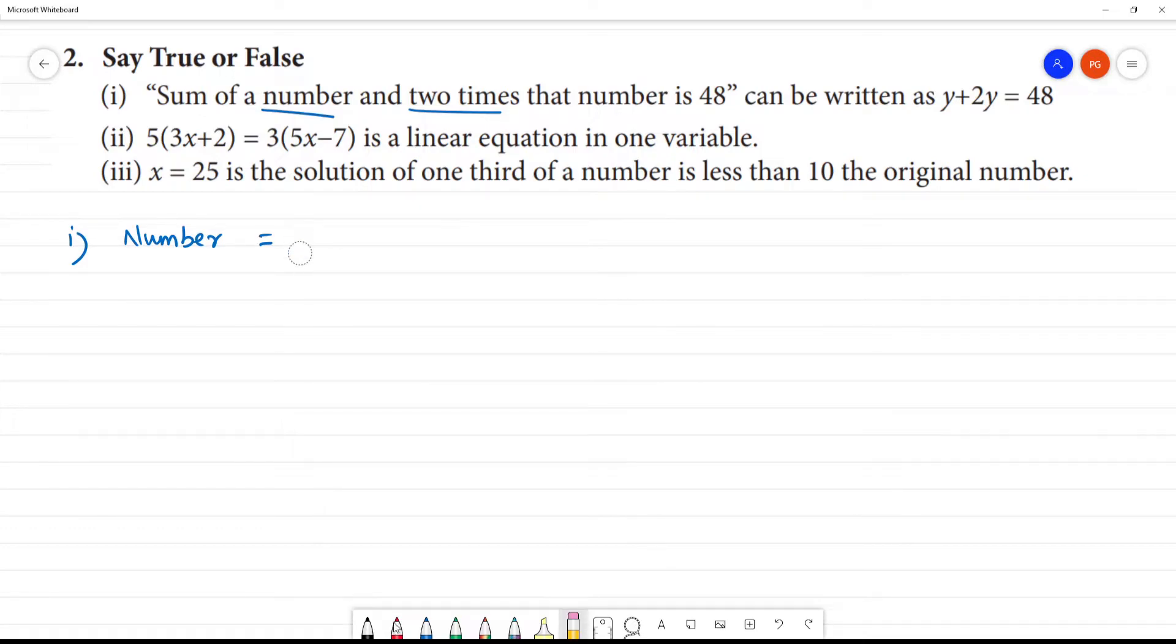So we have y, we have 2y. Two times the number, and the sum of y plus 2y is equal to 48. So this statement is true. The first statement is true. Clear.